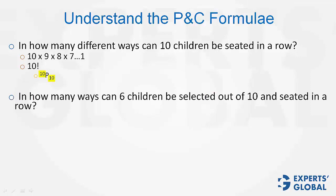Look at this one. In how many ways can 6 children be selected out of 10 and seated in a row? The 1st position in the row will have 10 choices. The 2nd position will have 9 choices. 3rd will have 8.